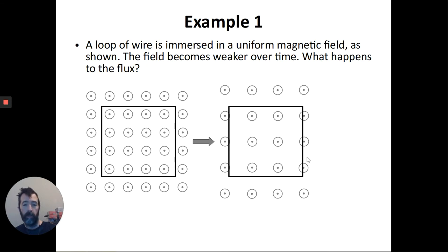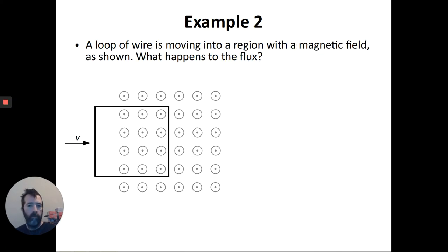So if the field is getting weaker, that means the lines are spreading out. So hopefully just by glancing at it, you can tell that the flux has decreased. There are fewer field lines. There's fewer dots inside the loop after the field weakens. So you can think of it purely visually like that if you want to. You can also think about it in terms of that formula. There's B times A times cosine theta. So if B goes down because the field's getting weaker, then the flux also is going to go down.